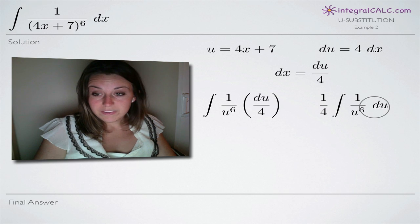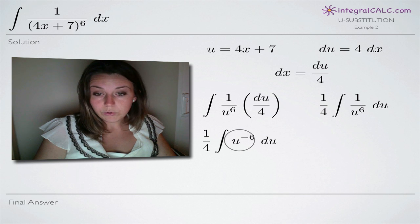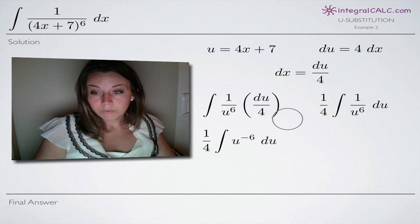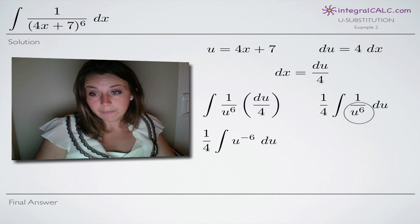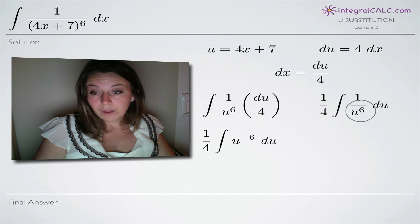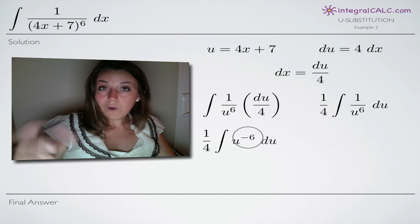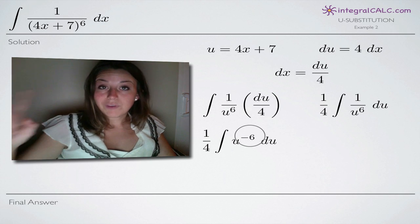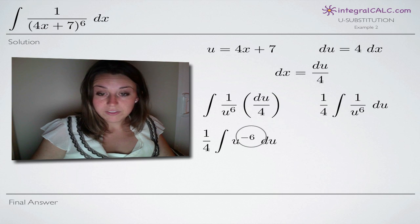Now our integral is simple enough. The last thing we're going to do is move the u to the 6th to the numerator. Remember that if you have a variable in your denominator and it's the only thing in your denominator and it's raised to a positive exponent, you can move it to the numerator by switching the exponent to a negative. So this 1 over u to the 6th is the same as u to the negative 6.